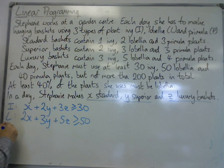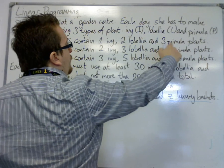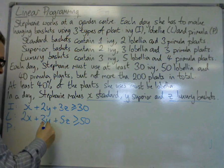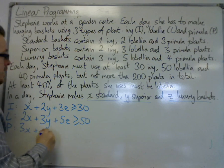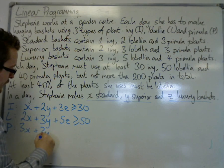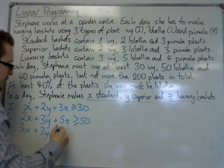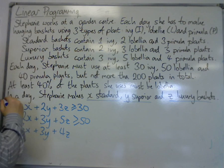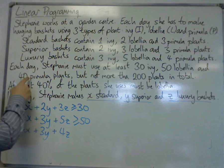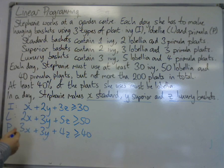Then we have the Primula. We have three lots of Primula in a standard basket, so that's three lots of x. We've got three lots of Primula in a superior basket, so that's three lots of y. And finally, four lots of Primula in a luxury basket, so that's four lots of z. And we must have at least 40 Primula, so that's greater than or equal to 40. So that's three of the first inequalities.